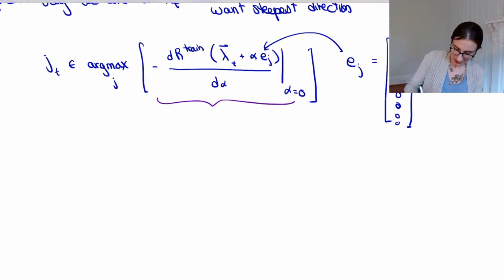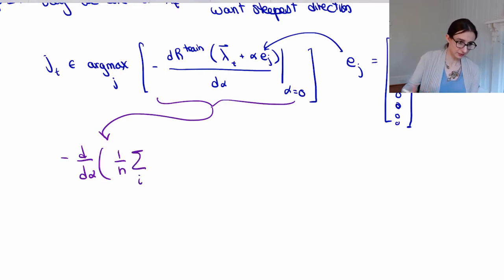So I'm just going to grab that and just work on that for a while. So I have negative d/d alpha, 1 over n. This is r train that we derived in the last video. So e to the negative, and then it's supposed to be m times lambda i. But here my lambda is now lambda t plus alpha e_j.